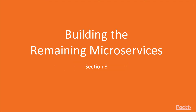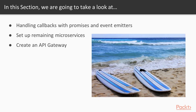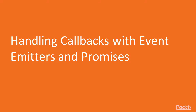In section 3 we will learn about handling callbacks with promises and event emitters. We will set up the remaining microservices and create an API gateway that will serve as a way to consolidate the microservices for a single app.